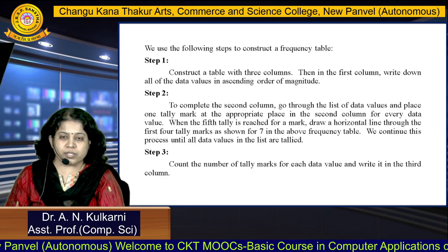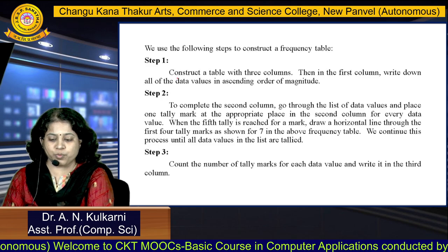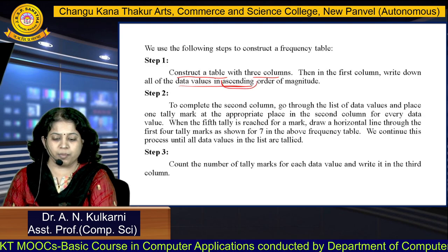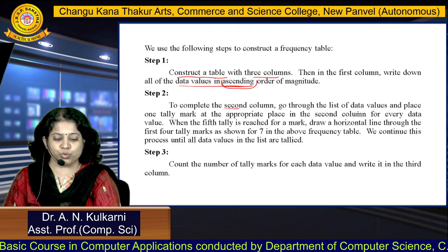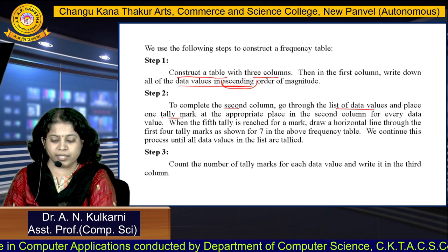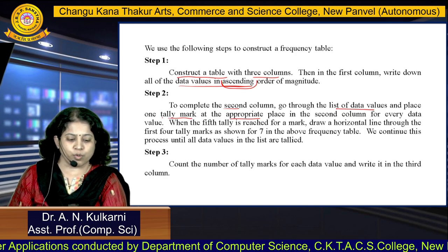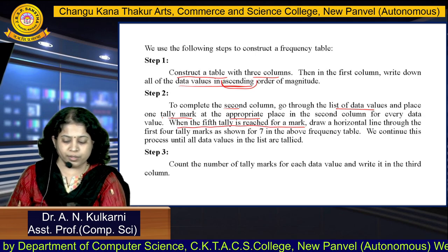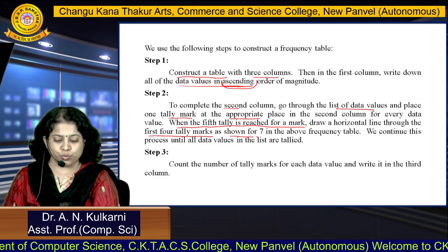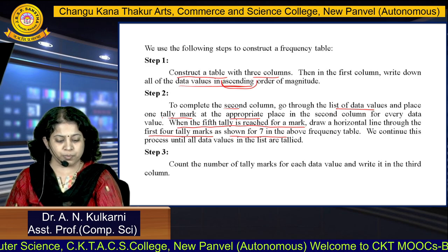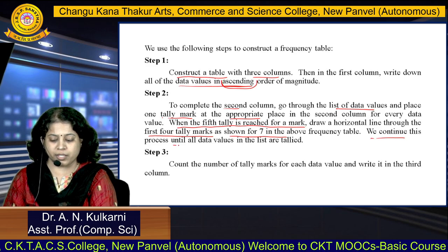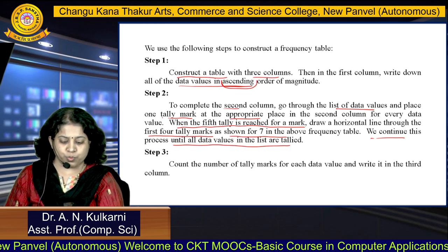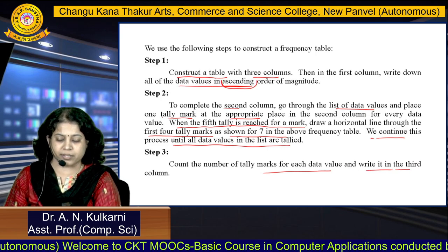These are the tips to construct a frequency table. Step 1: Construct a table with 3 columns. In the first column, write down all the data values in ascending order. Step 2: Go through the list of data values and place one tally mark at the appropriate place in the second column for every data value. When the fifth tally is reached for a mark, draw a horizontal line through the first 4 tally marks. Continue this process until all data values are tallied. Step 3: Count the number of tally marks for each data value and write it in the third column as a frequency.